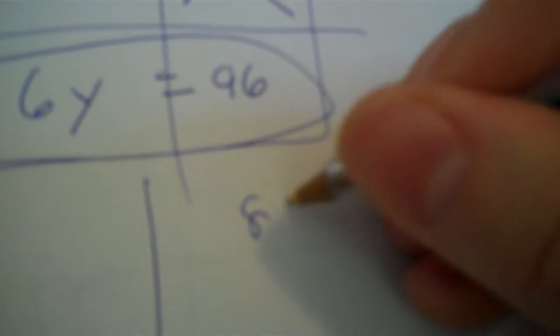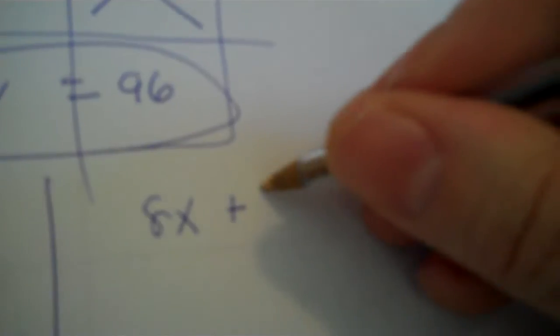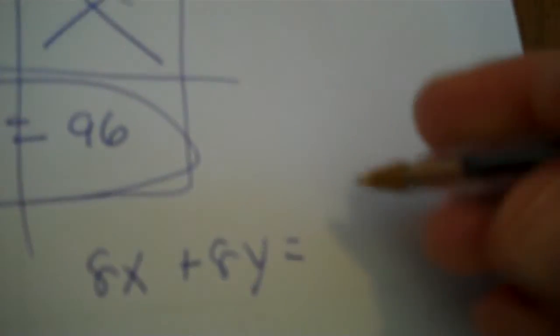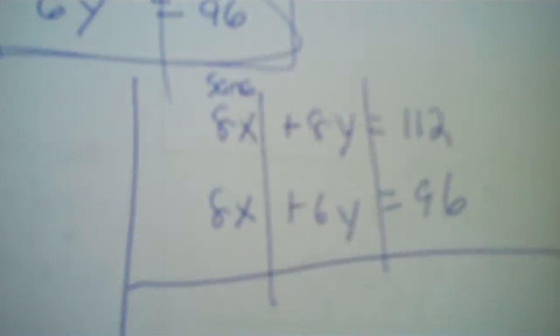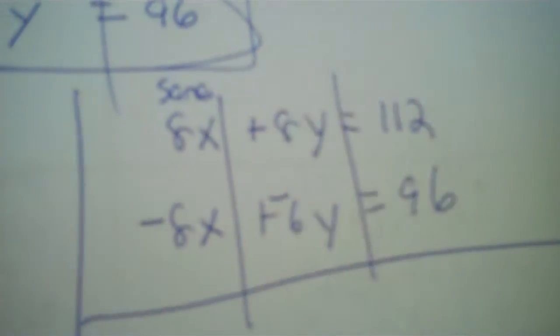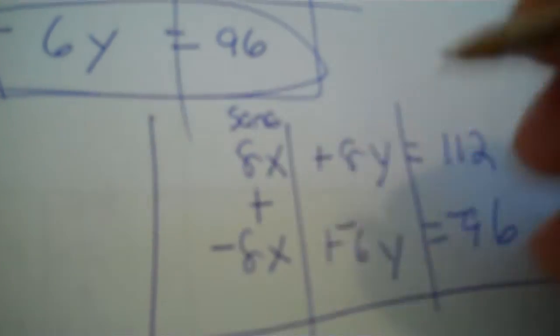8X plus 6Y equals 96. X plus Y equals 14. Elimination rules need to be used. So I'm going to get these the same. 8 times 1 times rest, 1 times rest. So 8 times 1X is 8X. 8 times 1Y is 8Y. 8 times 14 is 112. And then 8X plus 6Y equals 96. Now we have the same in the X column but they're both positive. That's opposite. Positive 6Y goes opposite, it's negative. Positive 96 goes opposite. Now you plus.